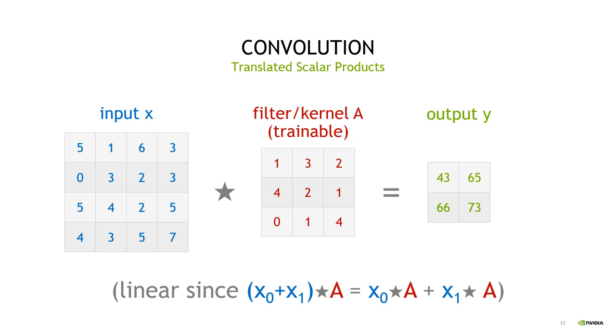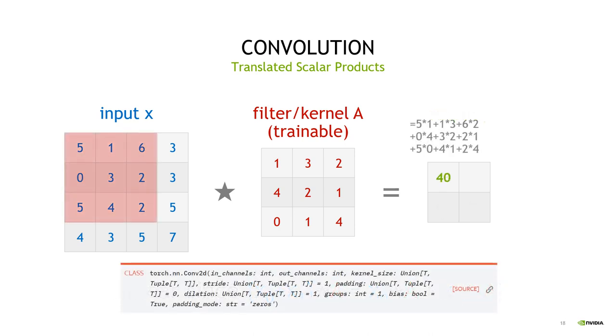Here we have the input vector x as an input, a 2D image, and it is multiplied with a filter or kernel A of size 3x3. Moving the kernel matrix to the upper left alignment position in the input image x, we have to compute the point-wise products: 5 times 1, 1 times 3, 6 times 2, and so on. If we sum over all those contributions, we get the final result 40. Now we repeat the same procedure for the alignment position 1 next to it, and we get the result 65.